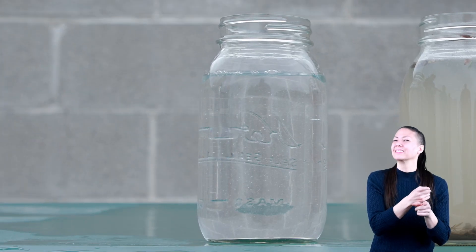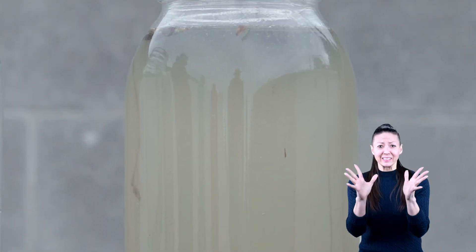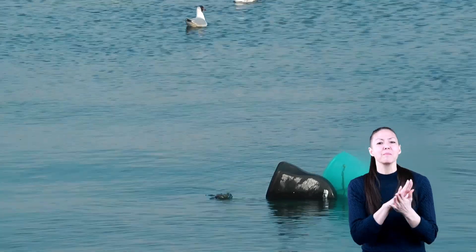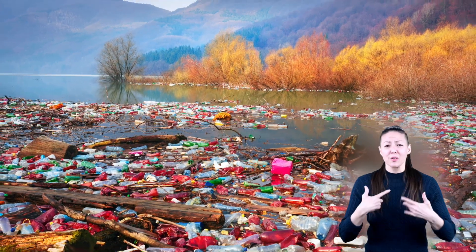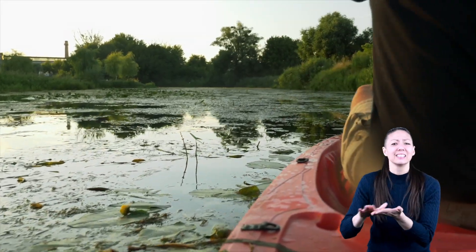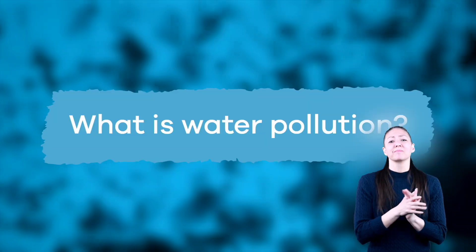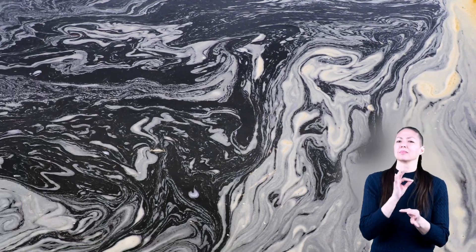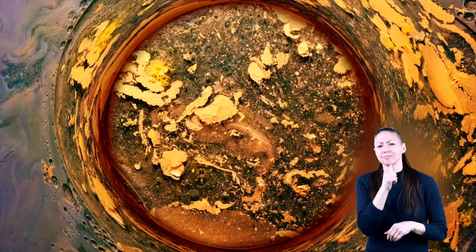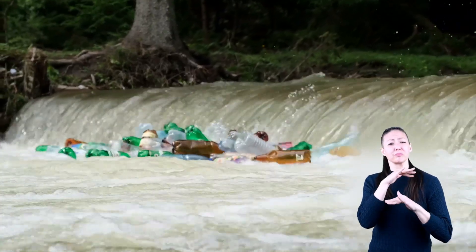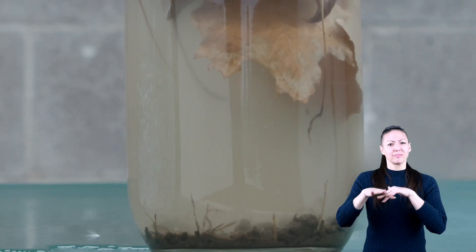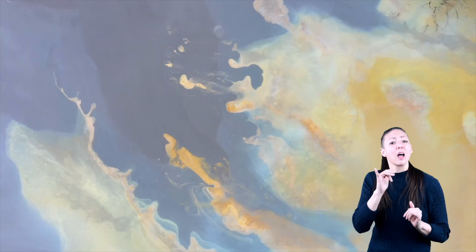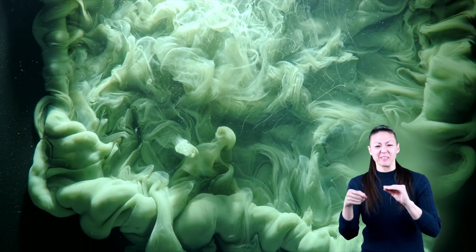Which one would you drink? I bet you picked the first jar, right? Because the water in the second is definitely dirty and polluted. Water pollution is becoming a huge problem, which is why it's important to prevent it whenever we can. What is water pollution? To put it simply, water pollution is dirty, unsafe water. Sometimes water is polluted by large pieces of trash we can see; other times it's contaminated by invisible chemicals unseen by the naked eye. Polluted water cannot be used for drinking because it contains chemicals or germs that can make you sick.